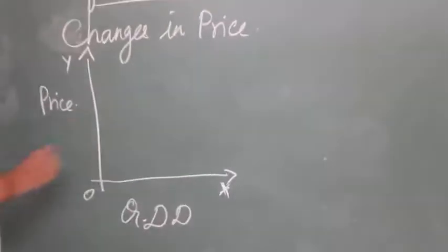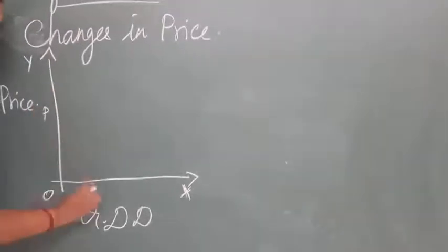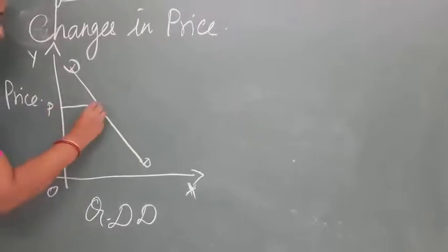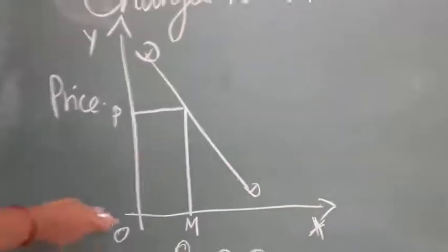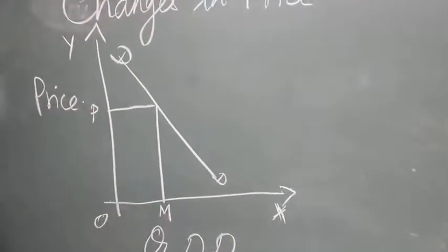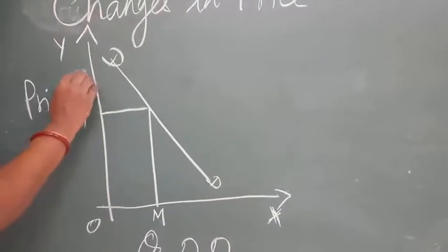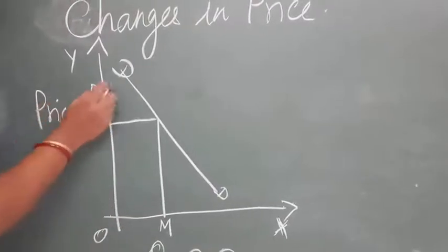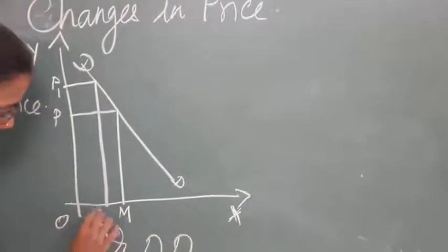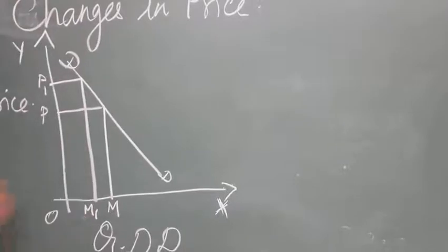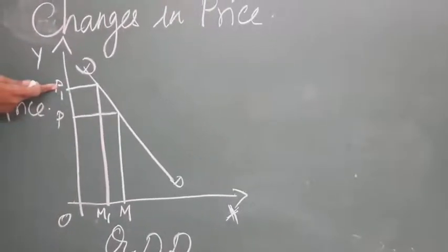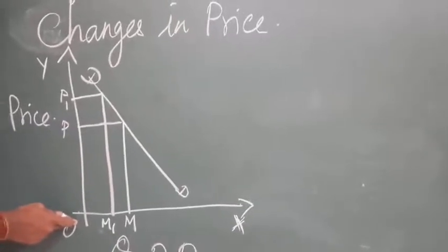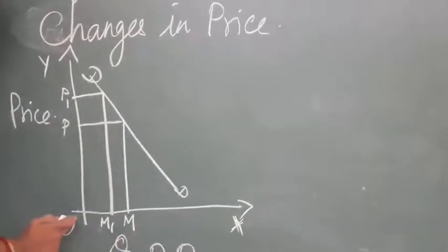If the price is OP, the demand is OM. Now the price has increased from OP to OP1. The demand has decreased from OM to OM1. So the increase in price brings a decrease in demand. This is called contraction.